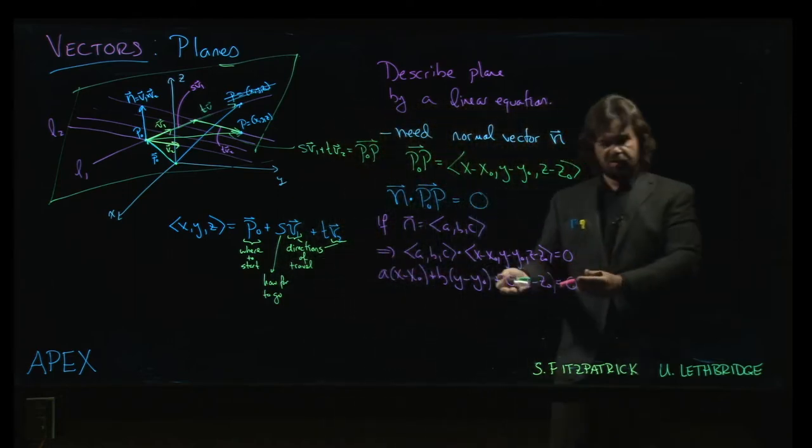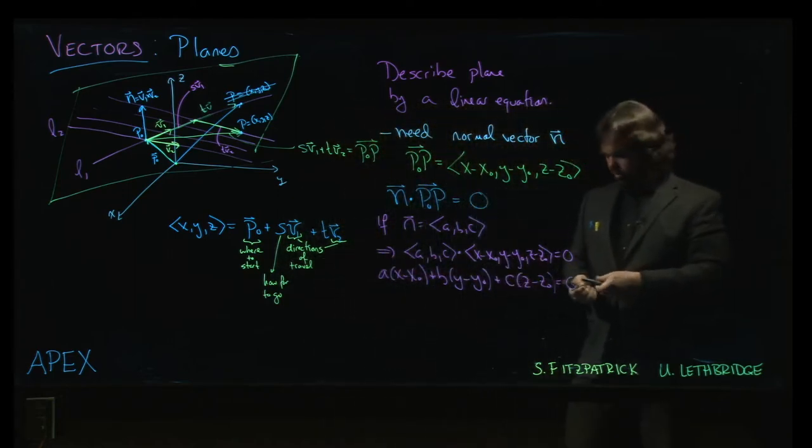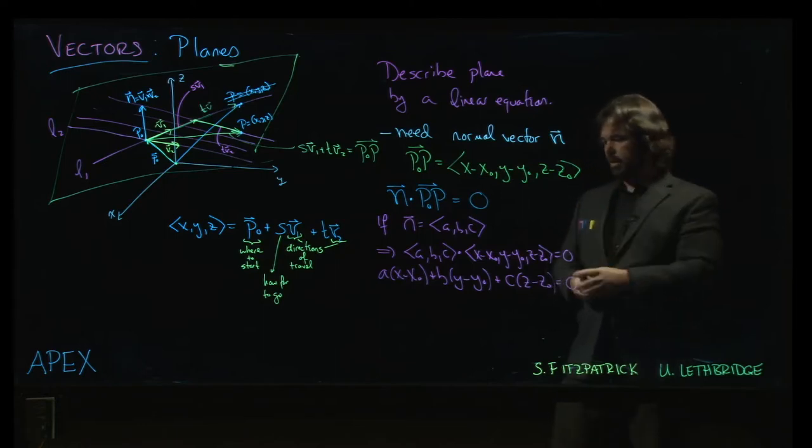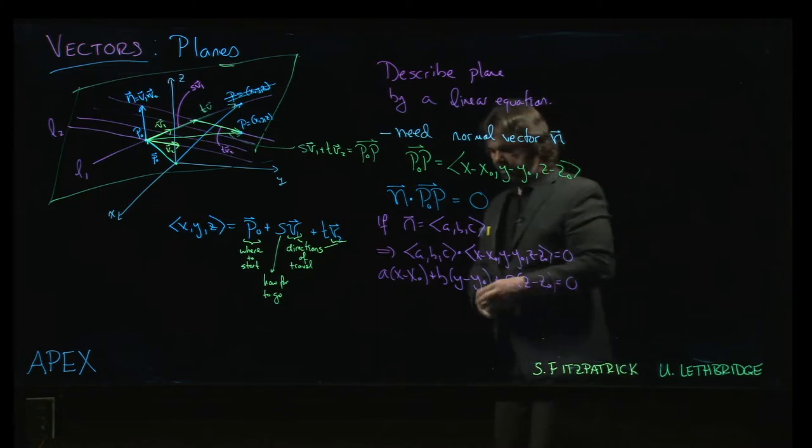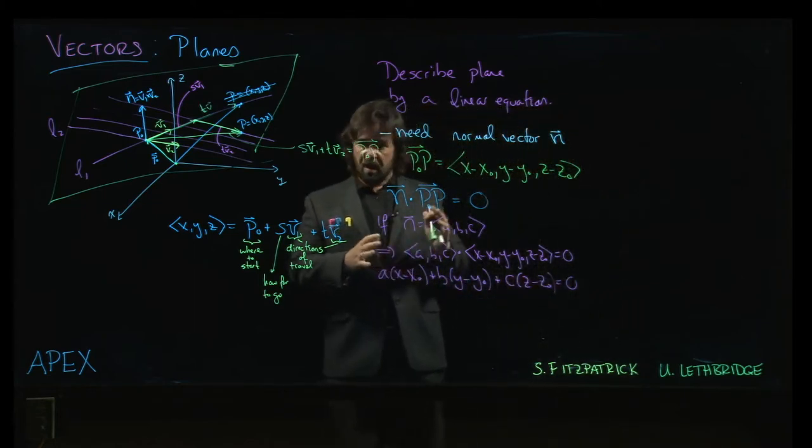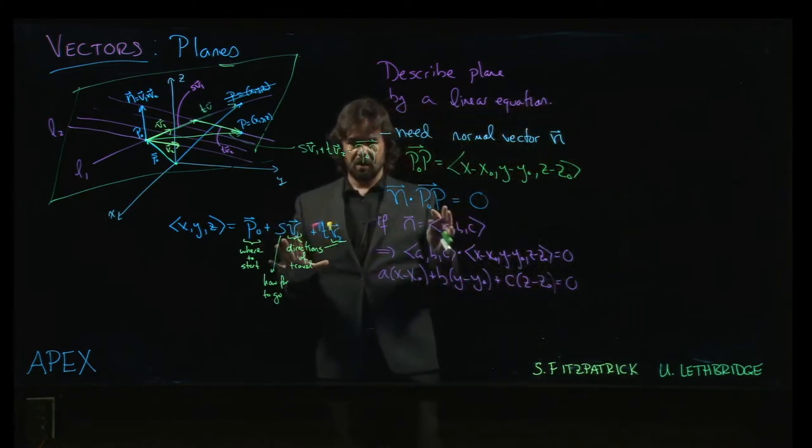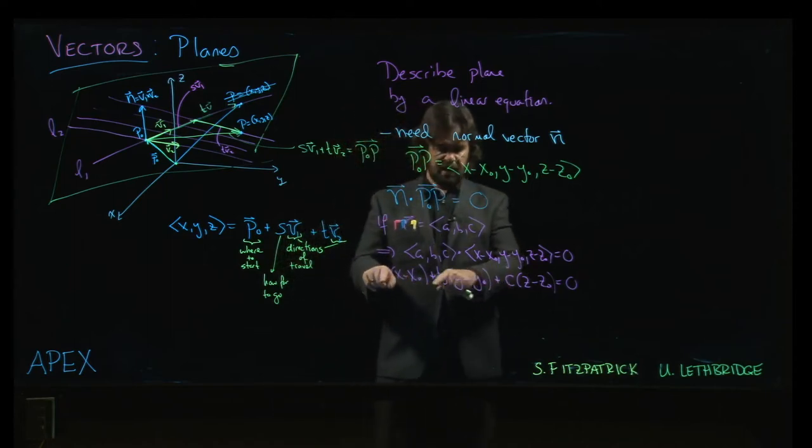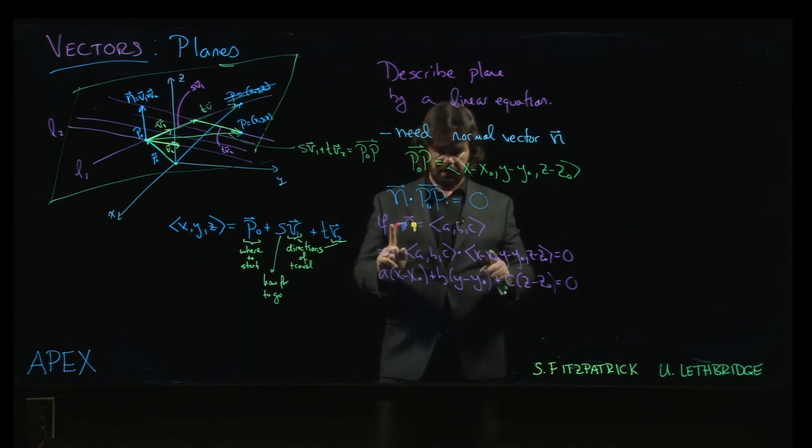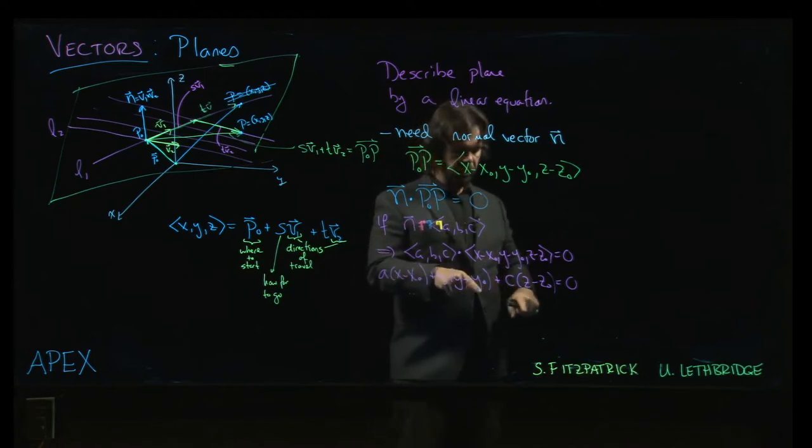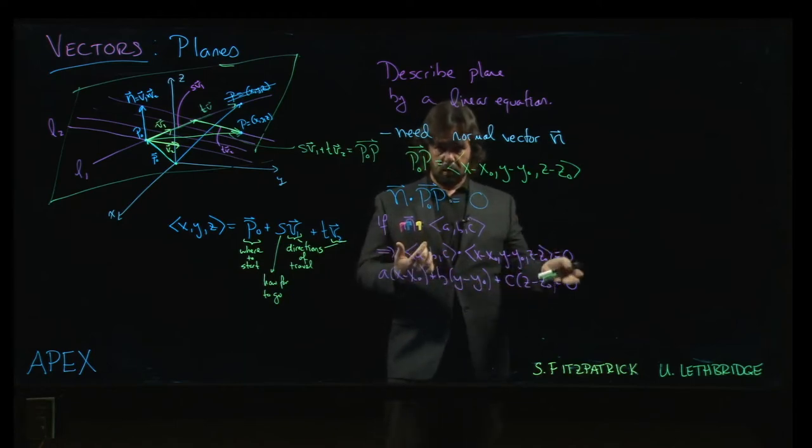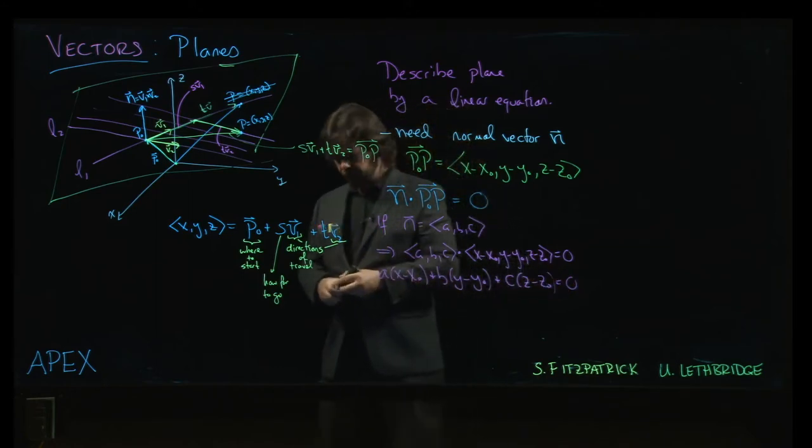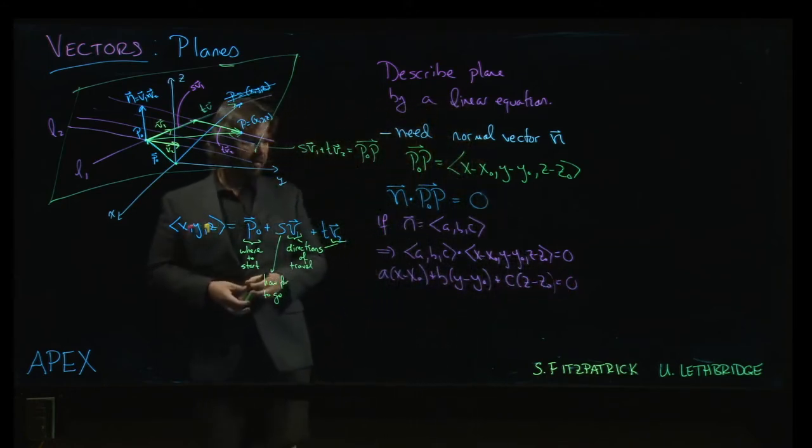And, we want to get to some other point on the plane. So, the point of it all is that whatever point on the plane we choose, when we construct this vector from our reference point, that is a vector which lies in the plane, parallel to the plane. So, it must be orthogonal to this normal vector. The defining property of this normal vector is that it's orthogonal to every vector in the plane.